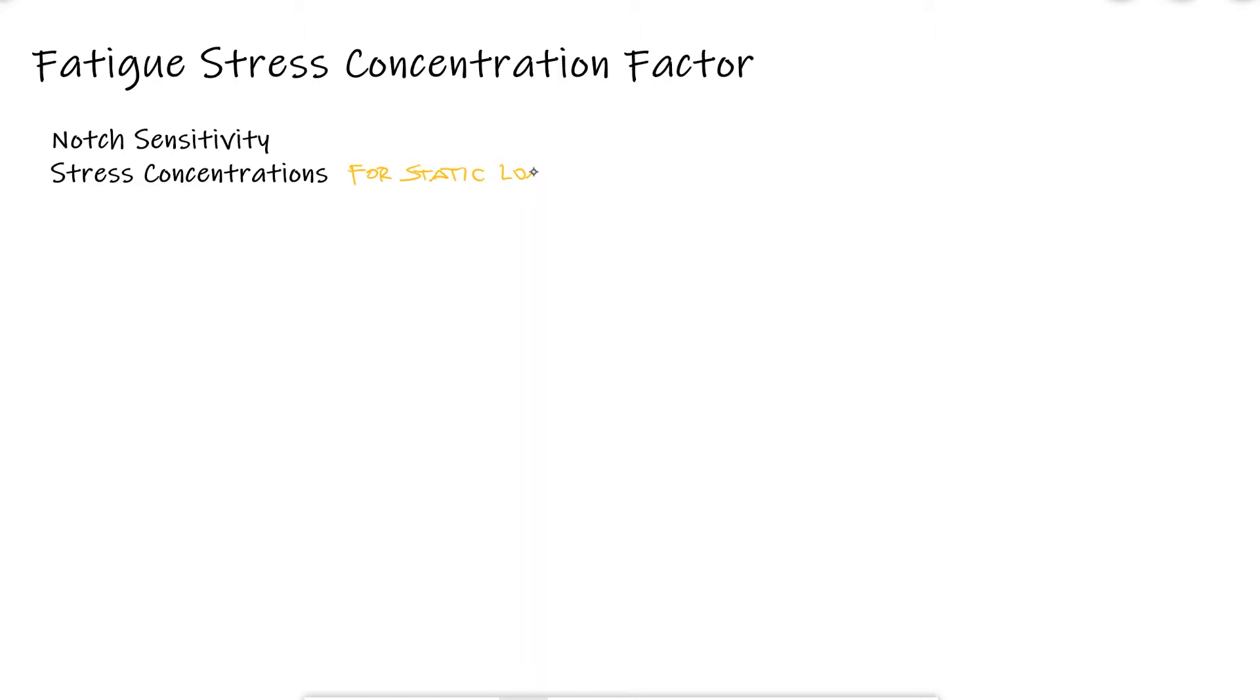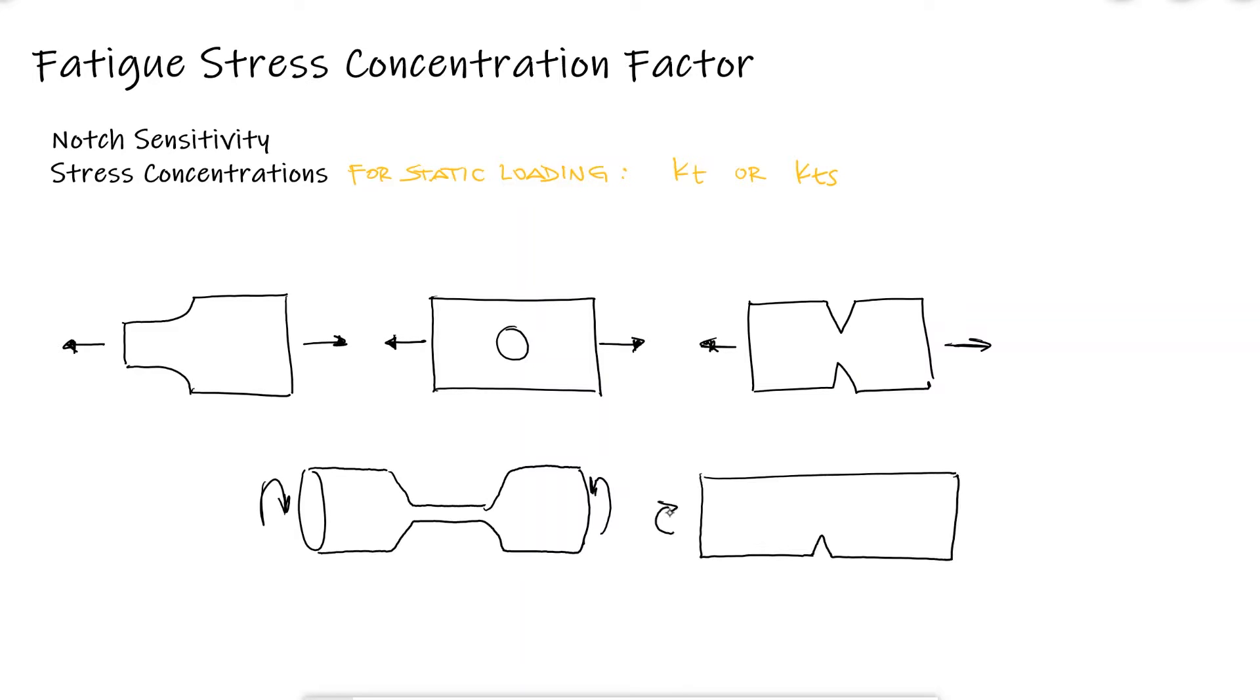only multiplied by a stress concentration factor KT or KTS for normal or shearing stresses respectively. However, these KTs that we often find by looking at stress concentration factor plots that depend on the geometric parameters and stress type only apply to static loading. Stress concentration factors still exist for dynamic loading and we call them fatigue stress concentration factors, KF or KFS.